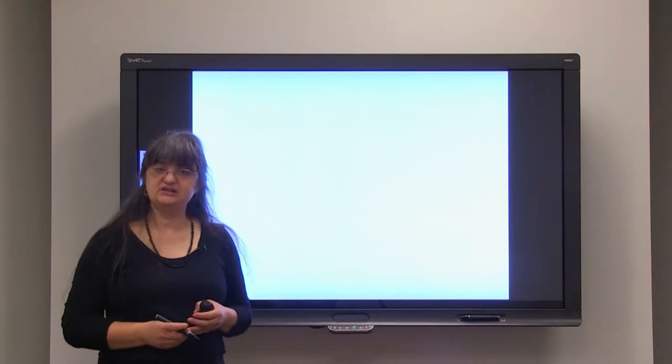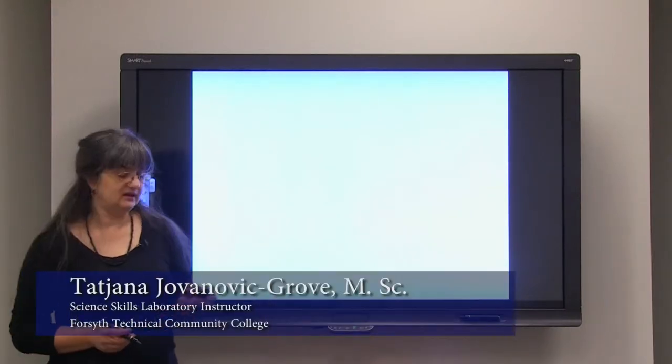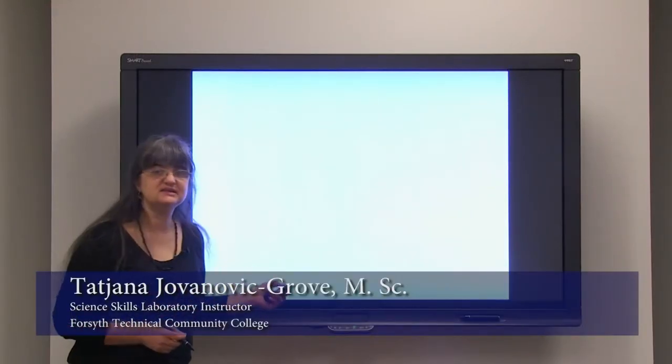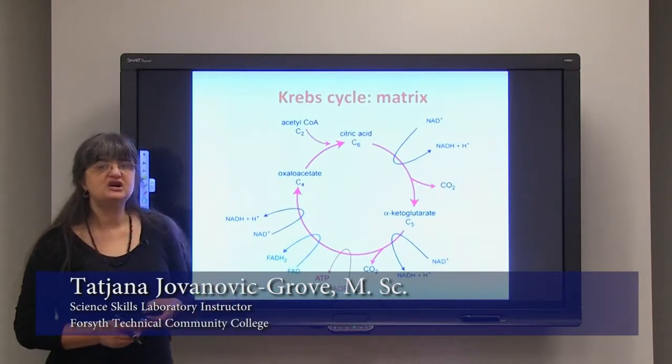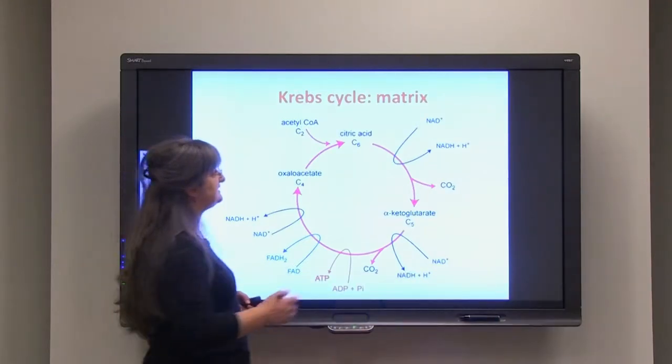In cellular respiration after glycolysis, the next step is citric acid cycle or Krebs cycle. Where is that happening?